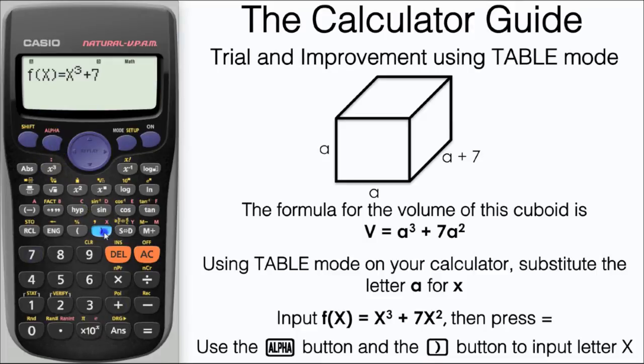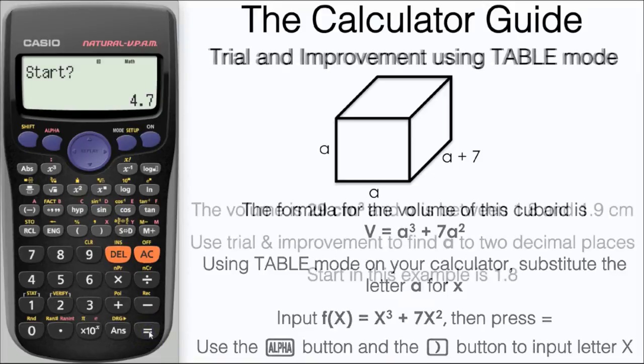Even though there is a button for A, use alpha and right bracket to input X. Input the function X cubed plus 7X squared.